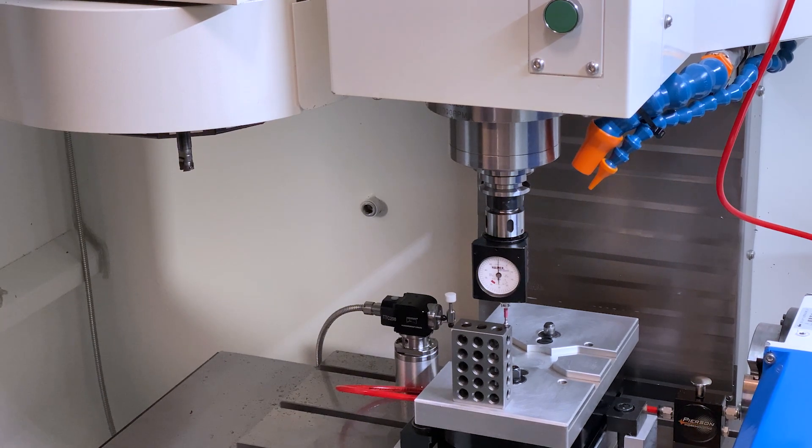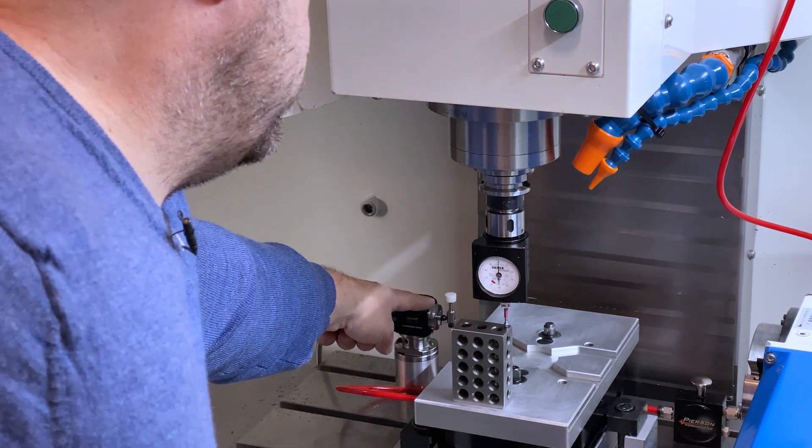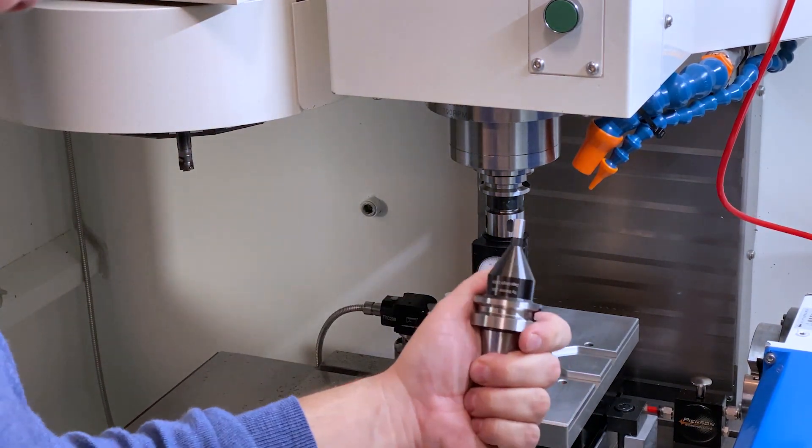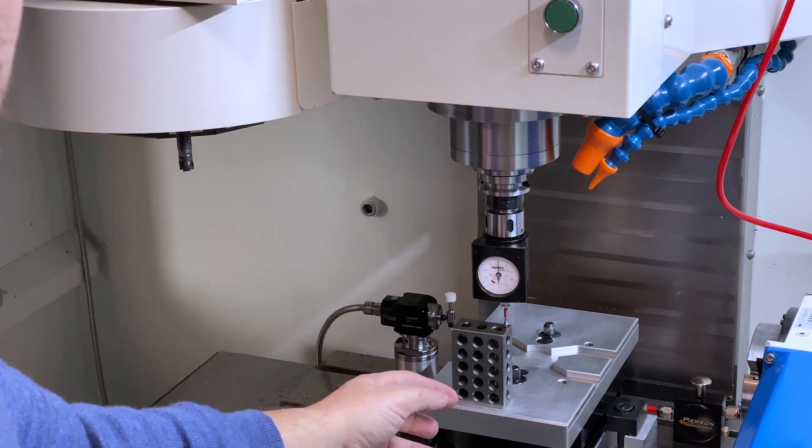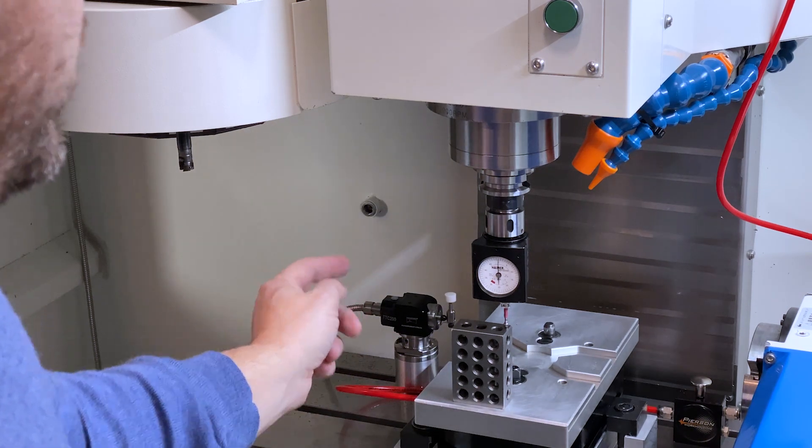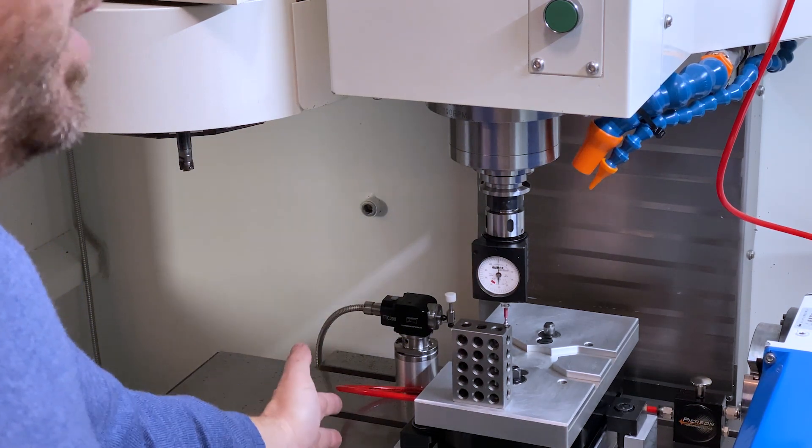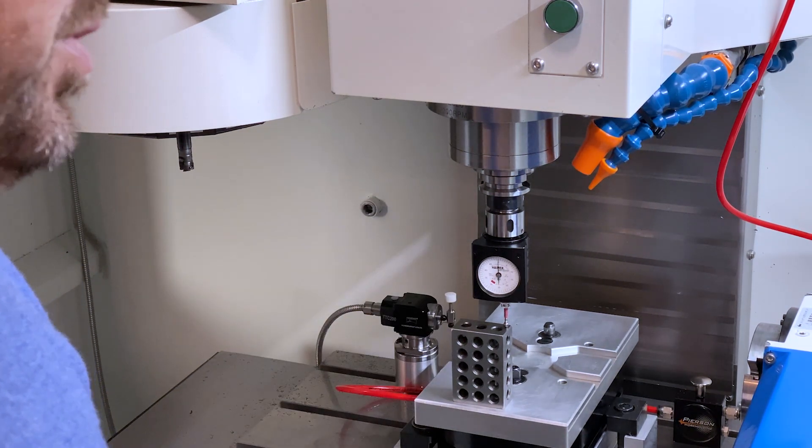As long as you calibrate your tool setter right there in the background—as long as you do your tool setter calibration with this tool—then when you do this same procedure, you'll be able to touch off your tools with your tool setter and touch off your work with your Hymer.